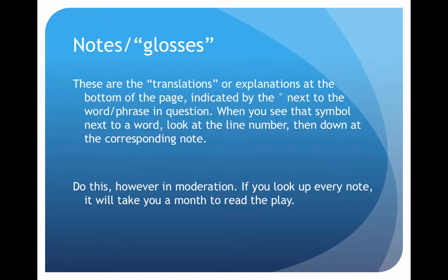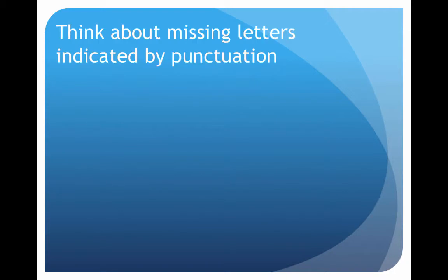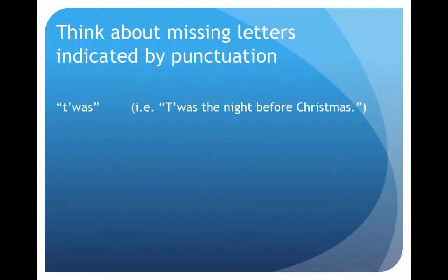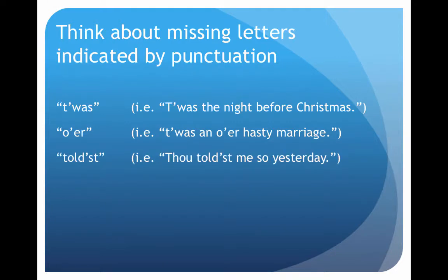There's a lot more punctuation in Shakespeare. Take this word, for example: t'was, as in 't'was the night before Christmas.' Well, that means 'it was,' right? The apostrophe is kind of in the wrong place, but we all know that t'was means it was. Or, 'it was an o'er hasty marriage' — what goes where the apostrophe is, is a V: 'over hasty marriage.' And you'll get used to identifying these.